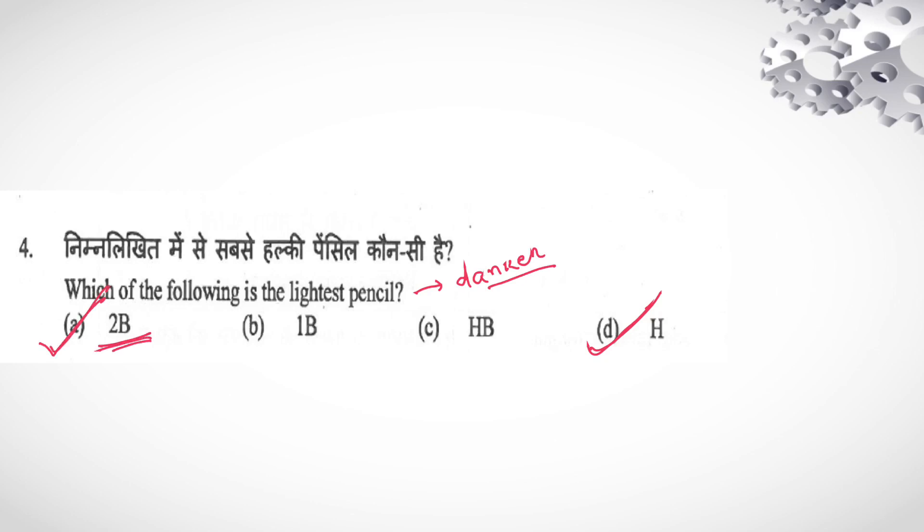And if they will ask for darker pencil, darker or more black, more black is 2B. B is having less black. And HB is medium. In 2B case, the lines, they will become more dark.